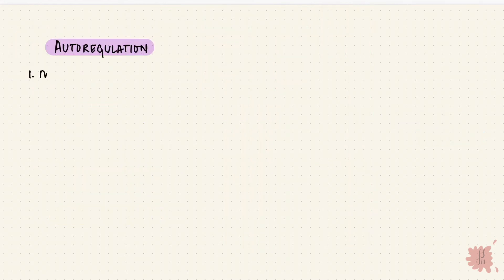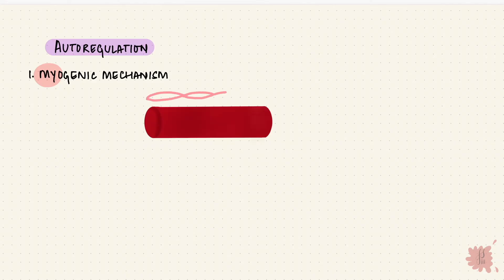There are two mechanisms by which the kidneys auto-regulate their flow. One is the myogenic mechanism. Myo means muscle, referring to the smooth muscle in the wall of the vessels. When the pressure in the vessels increases and the vessel stretches, calcium ions enter into the smooth muscle cells. Calcium influx causes smooth muscle to contract, so the vessel constricts — resisting being stretched — and that's how it keeps the flow constant.